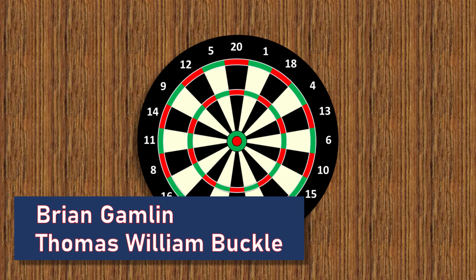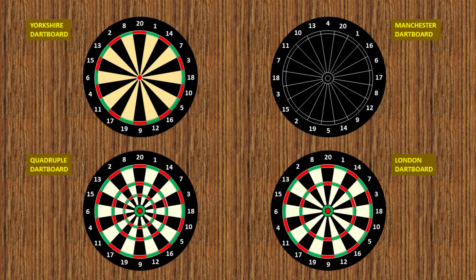Either way, it's been around for over 100 years and it's commonly called the London Arrangement, but there are in fact several other dartboard designs too.